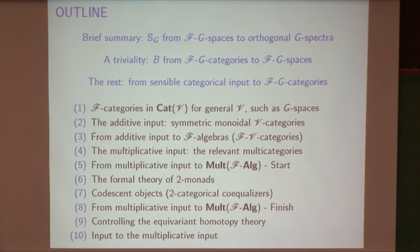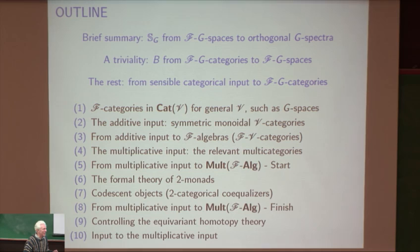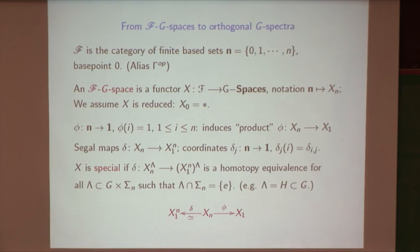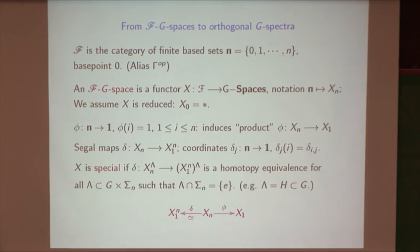I hope everybody agrees that having good multiplicative properties on G-spectra is a good thing. I'll show the rest as we go along. This is a review of what Bertrand told you already. F is the category of finite based sets. He had boldface F, I have script F—our collaboration never agrees on notation, so all the notations are slightly different.